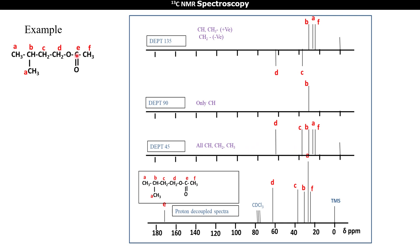The signal of carbon E is missing in DEPT 45 because it is quaternary. In DEPT 90, only the CH carbon type B is seen in positive phase. In DEPT 135, the signals of A and F (CH3 types) and carbon B (CH type) are seen in positive phase, while carbon atoms C and D, which are CH2 groups, give negative signals.